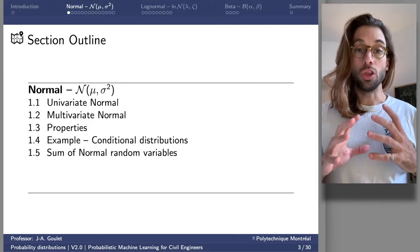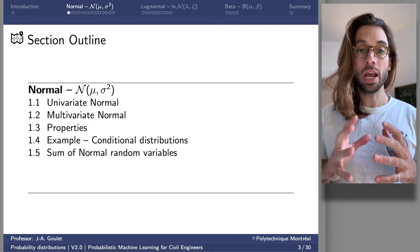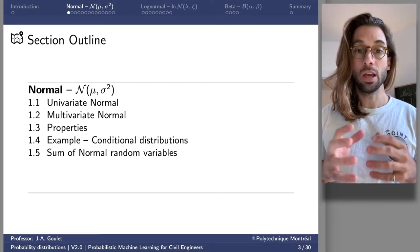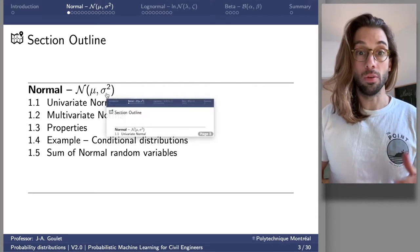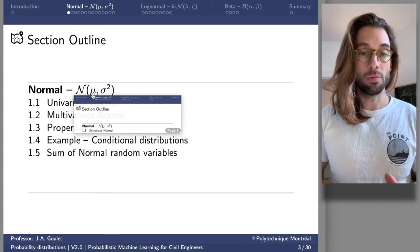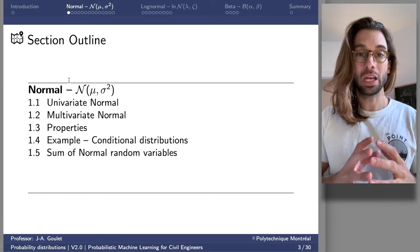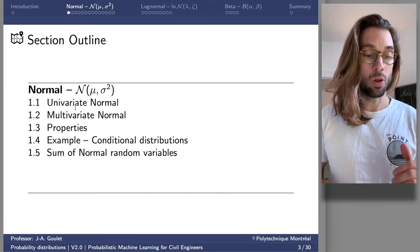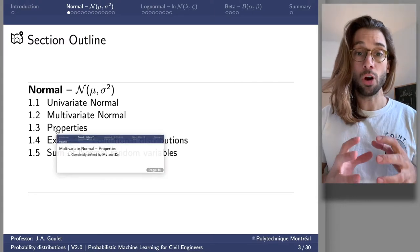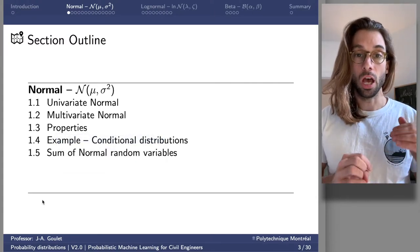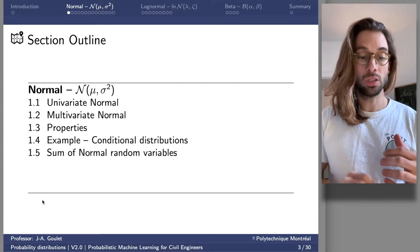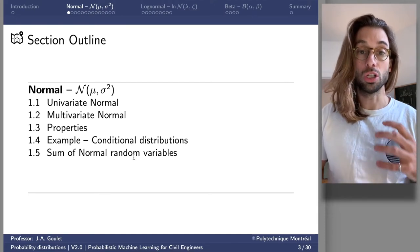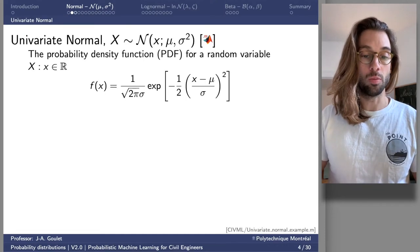Let's start with the normal distribution, which is widely used in machine learning. We'll see its key properties. Typically we refer to the normal random variable using the calligraphic N, parameterized by the expected value and standard deviation. We'll first look at the univariate case, then the multivariate case, and examine key properties for use in machine learning models, including conditional distributions and the sum of normal random variables.